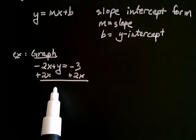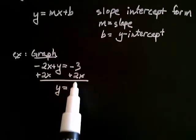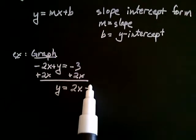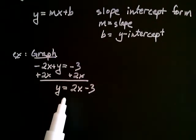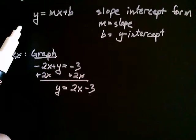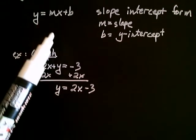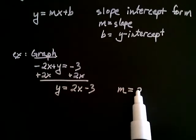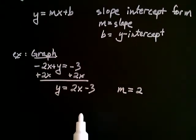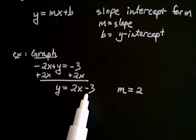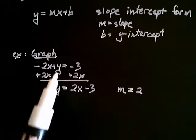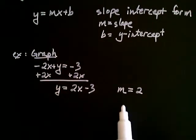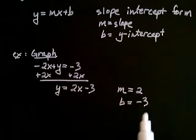I'm going to do that by adding 2x to both sides. So now y is equal to 2x minus 3. Comparing this to slope-intercept form, I can see that my m is 2 — that's the slope. The y-intercept is negative 3; I can view this as plus negative 3, so b is equal to negative 3.